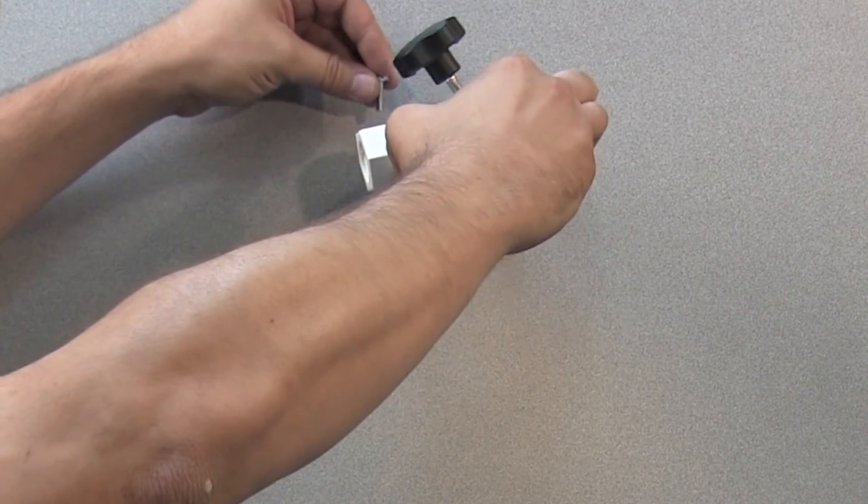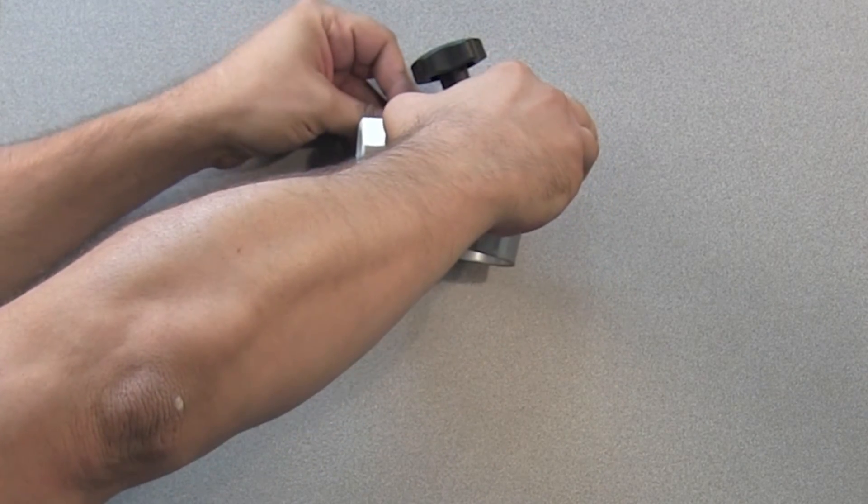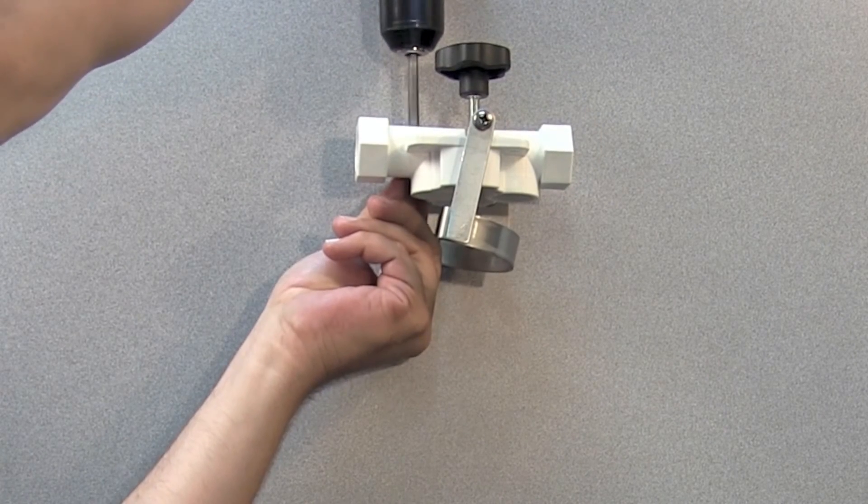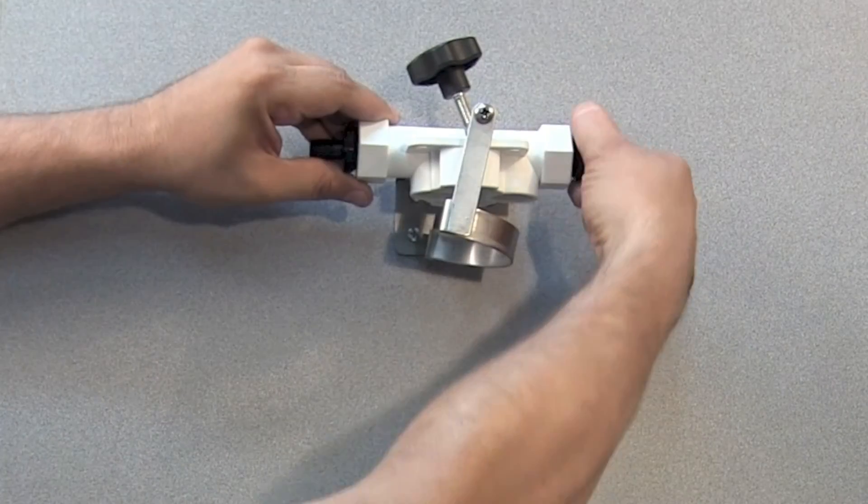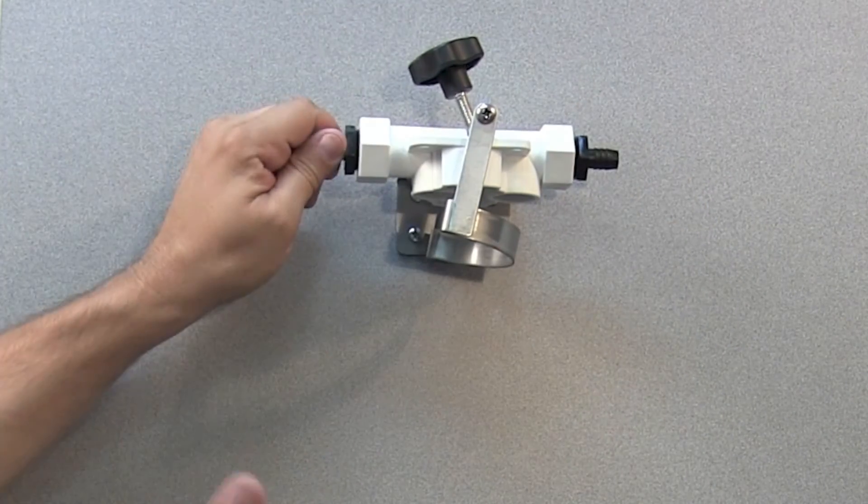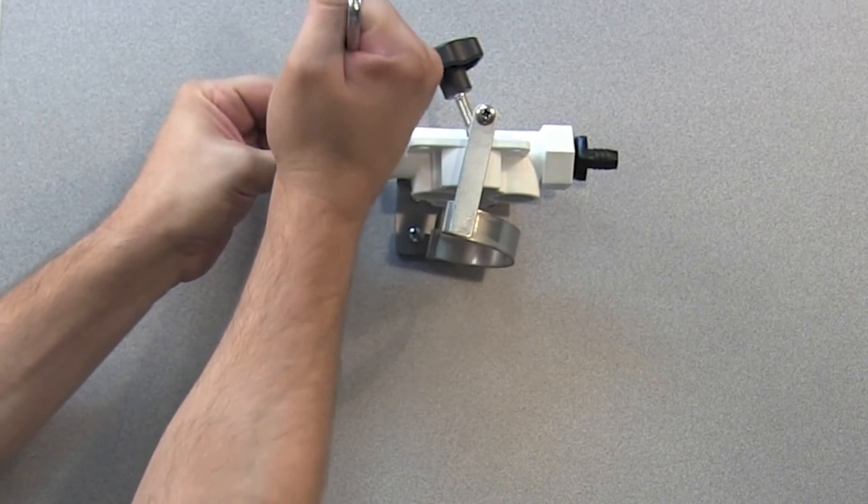Go ahead and mount the manifold with the provided hardware. Because we're installing into flexible vacuum tubing, we'll use the provided tubing barb adapters to connect the tubing we spliced earlier.